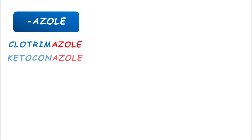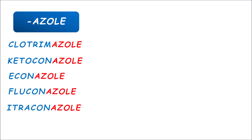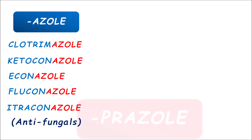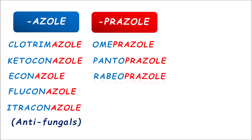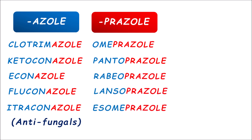The drugs with the -azole suffix include clotrimazole, ketoconazole, econazole, fluconazole, and itraconazole — all classified as azole antifungals with the primary suffix -azole. On the other hand, we observe the suffix -prazole: drugs ending with -prazole include omeprazole, pantoprazole, rabeprazole, lansoprazole, and esomeprazole, which is the S-isomer of omeprazole. All these are proton pump inhibitors. Even though they contain -azole within the suffix, PPIs are identified by the proper suffix -prazole.